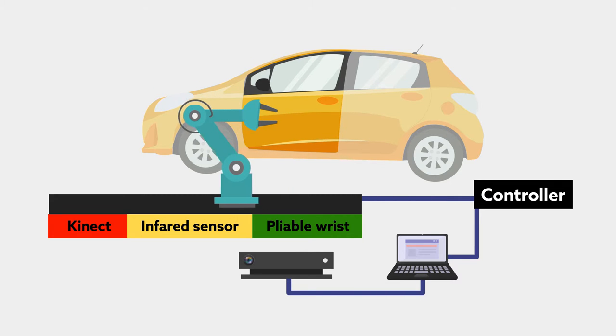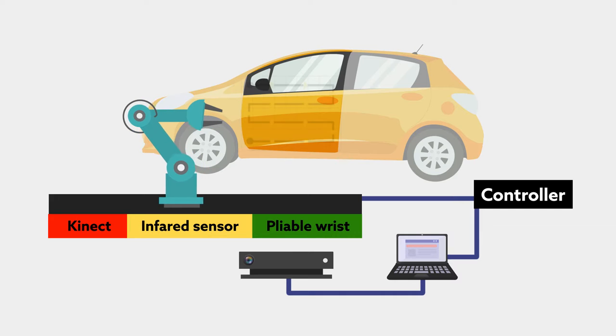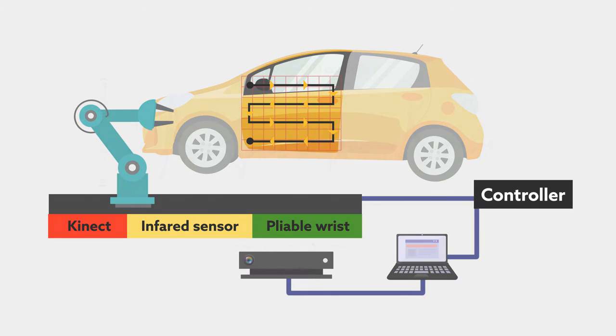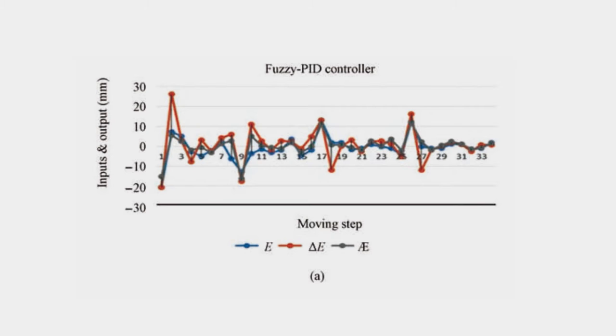Experiments showed that the arm could successfully map out paths for both approaching and inspecting the door. And it followed those paths with minimal error and no damage.